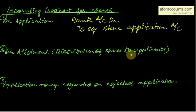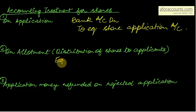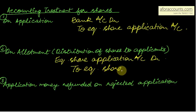Now for allotment — that is distribution of shares to the applicants. You had credited equity share application account earlier. Ultimately, equity share application will be debited. And capital will be raised — that is the whole purpose of this exercise. Capital account balance is always credit. So equity share capital account will be credited. On allotment your entry will be: equity share application account debit, to equity share capital account.